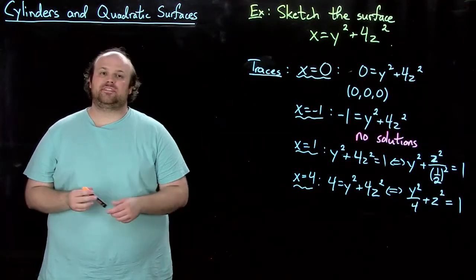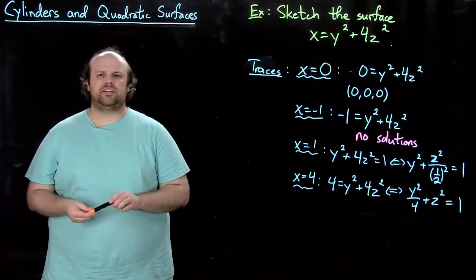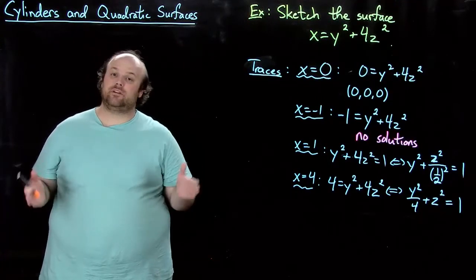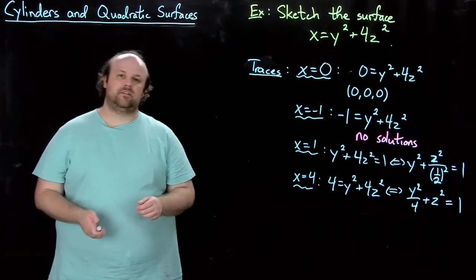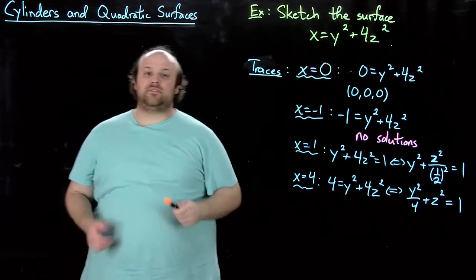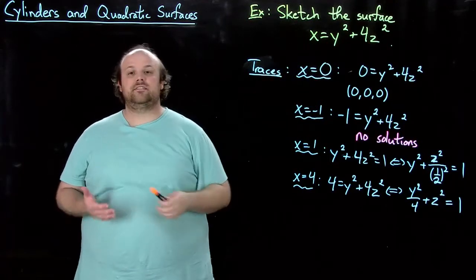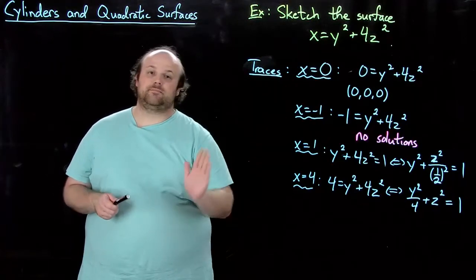Okay, so let's do one more example of graphing a quadratic surface, and this time we're going to use traces in one variable, like just taking different values of one variable. So, if we look at this here, the y and the z are both squared, but the x isn't. So, the x is sort of the special value here. So, here we've already done some traces.